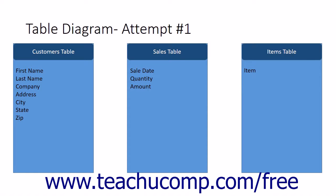Once you have a rough idea of what you would like to record and what tables you will need, you must ensure that each table has what is called a primary key. A primary key is a column or combination of columns that will produce a unique value for each row in a table. Many times an additional column is added to provide this unique identification. For example, your social security number is used for this purpose by the government, and you also have a unique driver's license number.